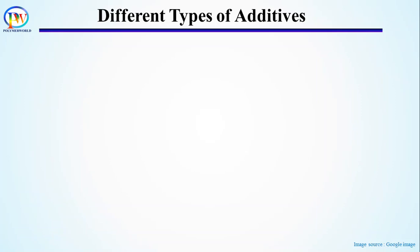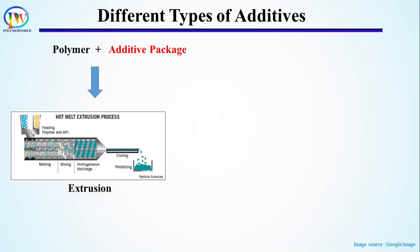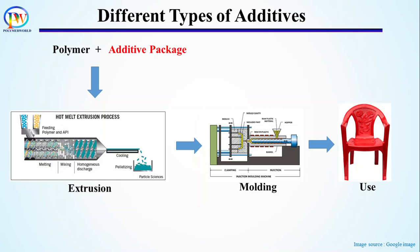Now let's discuss different additives and their functions in plastic materials. There are several steps in which polymers are converted into different products, which can be represented by two basic steps. In the first step, polymers are mixed with an additive package — a mixture of different additives added to plastic to achieve desired performance. Then the mixture is extruded to prepare a formulated resin, which is then molded to form the desired product. Additional additives can be added during molding or post-production, but for simplicity let's assume all additives are added through the additive package.